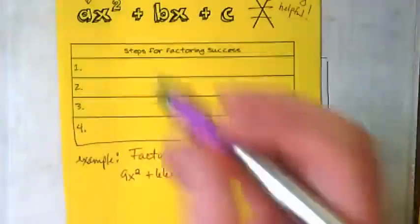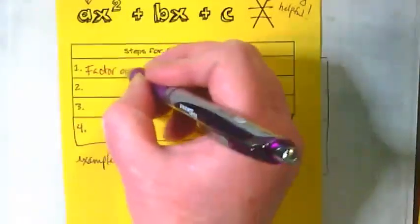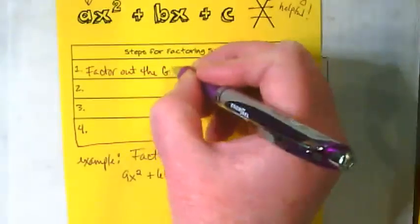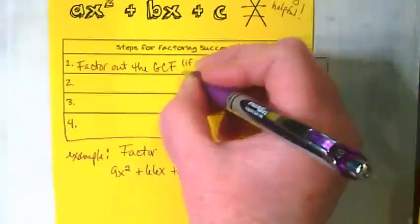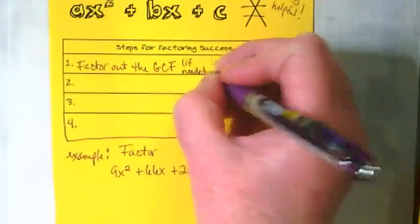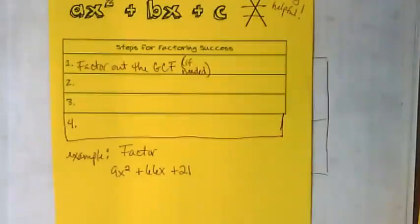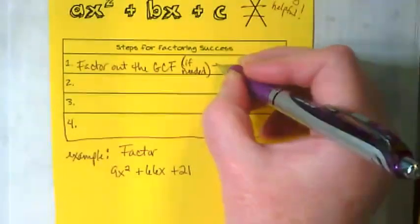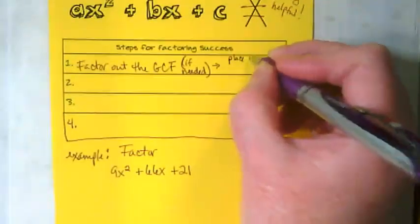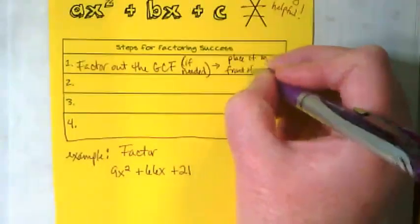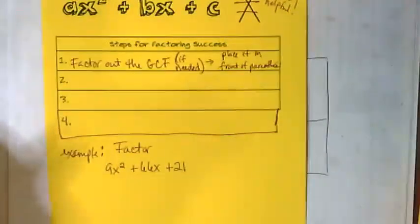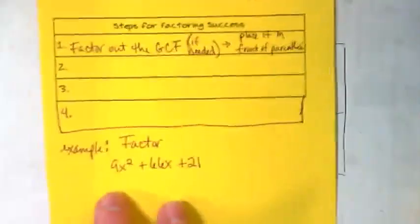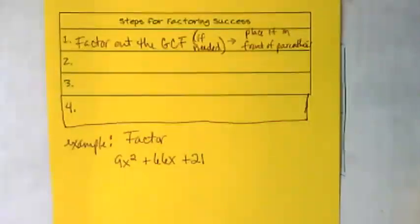Step 1. Step one is to factor out the GCF, but I want you to put in parentheses if needed. This is not always something we have to do. But if we do factor out the GCF, we want to place it in front of our parentheses.